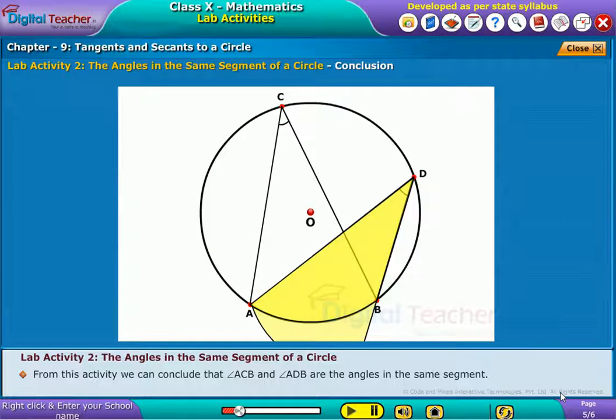From this activity, we can conclude that angle ACB and angle ADB are the angles in the same segment. Therefore, the angles in the same segment of a circle are equal.